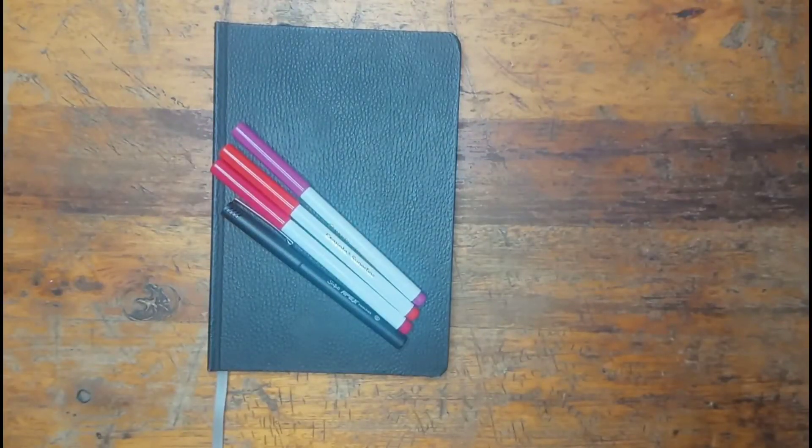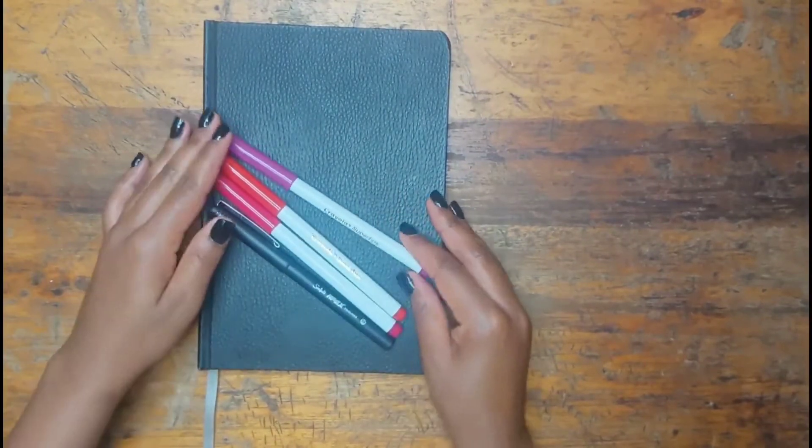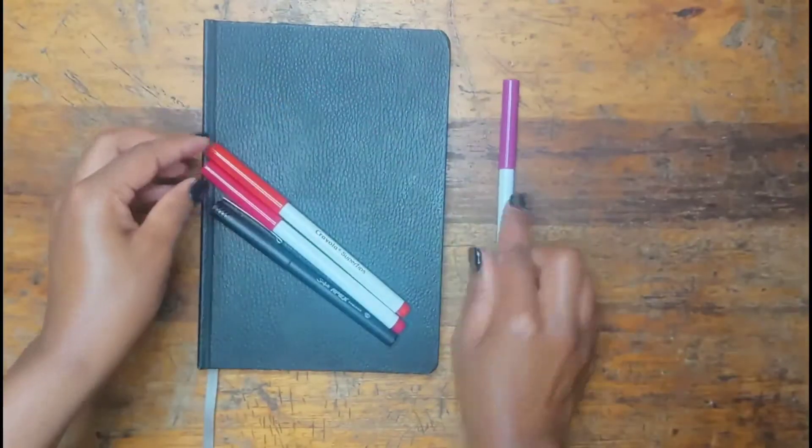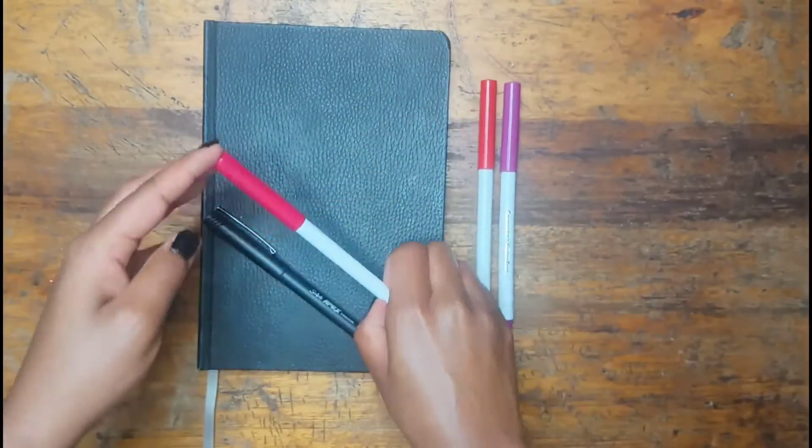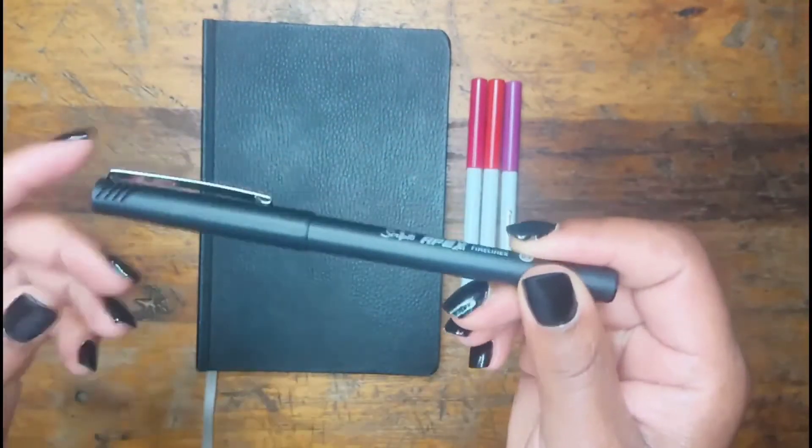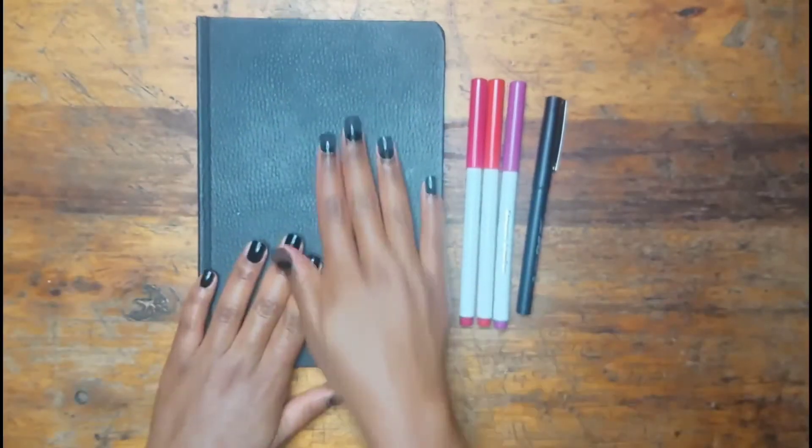Hey everyone, welcome back to my channel and welcome back to another plan with me video. This time we are planning for the month of November and I'm showing you my supplies for the month. It's just these three Crayola Super Tips, my very handy Crayola Super Tips, and this black fineliner.